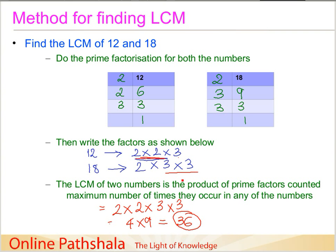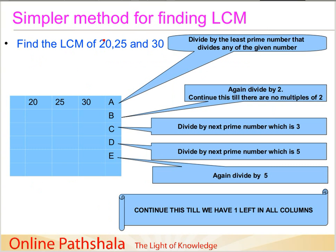That was the method to find LCM by prime factorization. To summarize: we do prime factorization for both numbers, write down the prime factors, count the maximum number of times each distinct prime factor occurs in any of the numbers, and multiply them all together. Now I will give you an even simpler method. In this method you can take all the numbers together. The example we will take here uses three numbers: 20, 25, and 30, and we have to find the LCM for these.